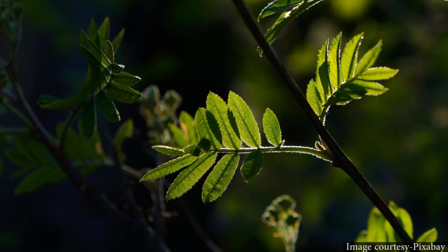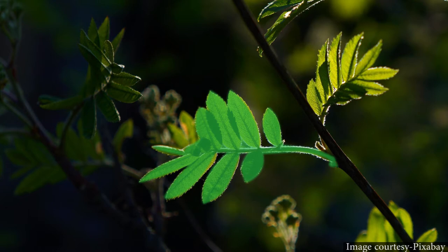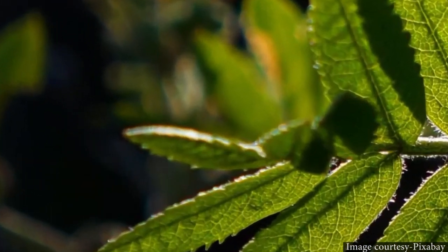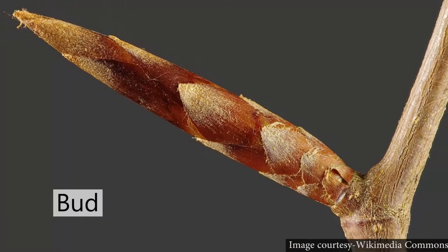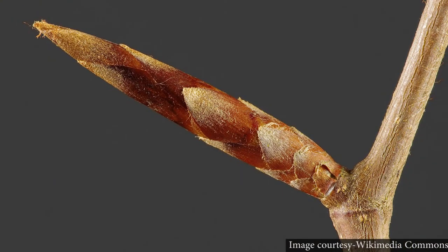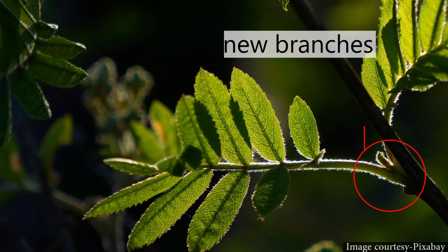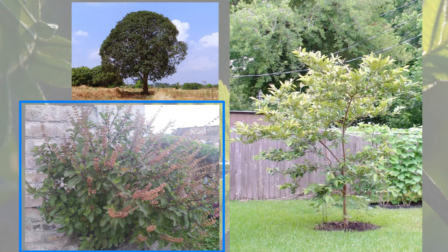We will study parts of the stem with the help of a specimen. Leaves are produced on the stem, and the point or place where a leaf is produced is called a node. The part of the stem between two nodes is called the internode. The youngest part at the tip or apex is called a bud, which keeps the stem growing. At nodes, the stem produces branches.